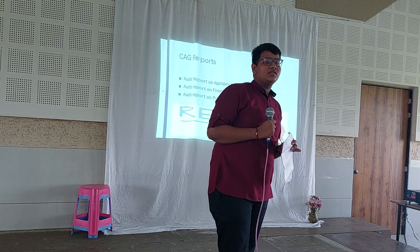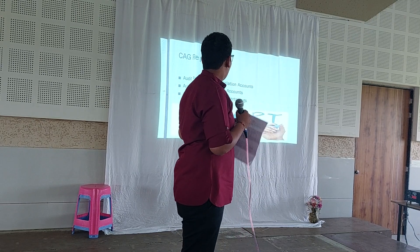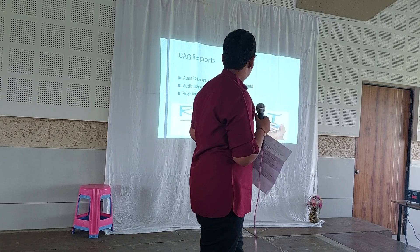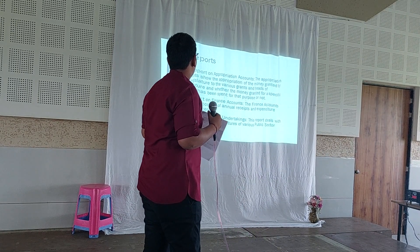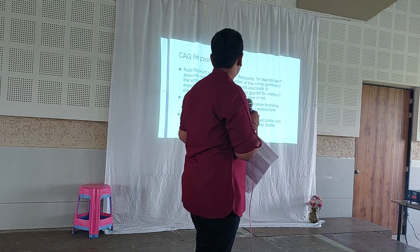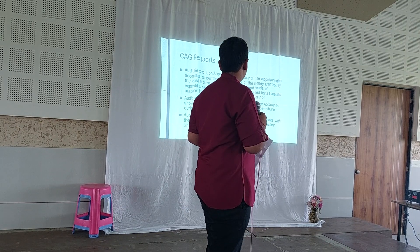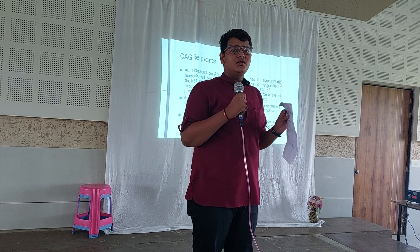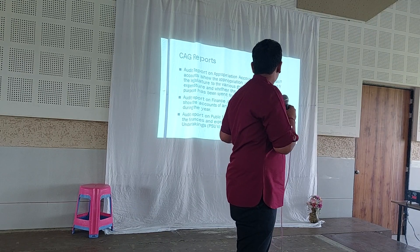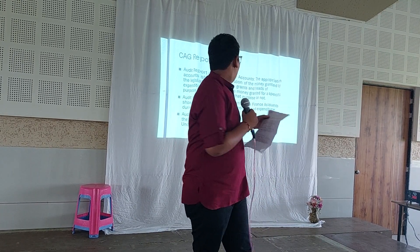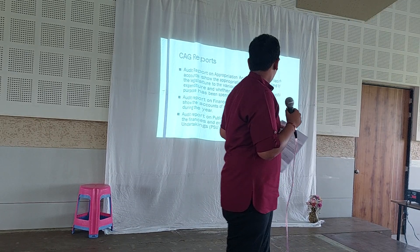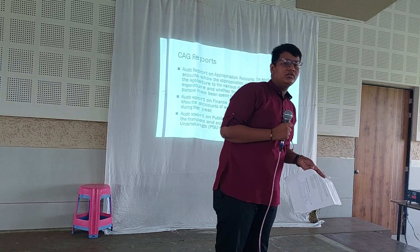There are three types of reports that CAG provides. First, the Audit Report on Appropriation Accounts, which shows the appropriation of money granted by the legislature to various grants and heads of expenditure, and whether the money spent was for that specific purpose. Second, the Audit Report on Finance Accounts, which shows annual receipts and expenditure of the current year. Third, the Audit Report on Public Undertakings like railways, post, etc.